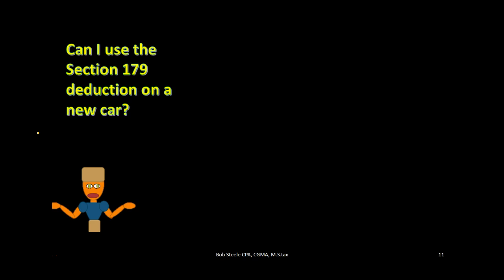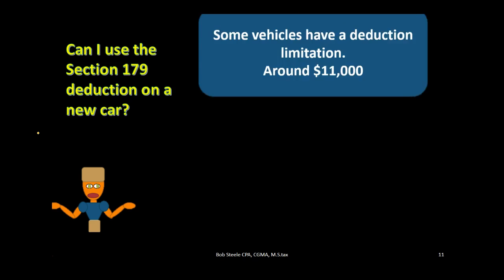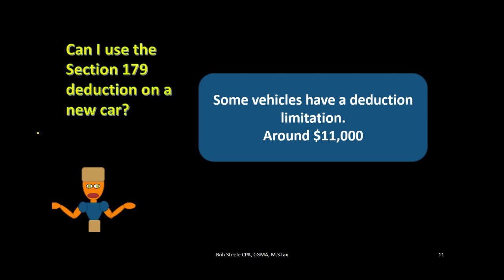Can I use the section 179 deduction for a new car? Vehicles are often a question for businesses. If it's a large work truck that's clearly work-related, you're much more likely to qualify. But for a four-door car — especially a luxury car — there are often limitations. The cap is usually around $11,000, so the 179 deduction is much less effective in that case. The IRS scrutinizes autos closely because of perceived abuse in distinguishing personal versus business use.